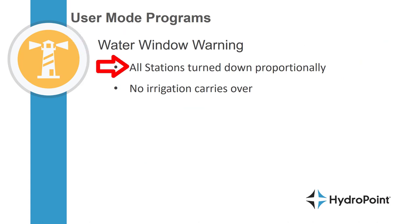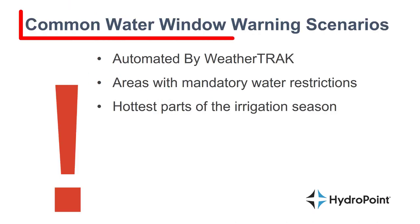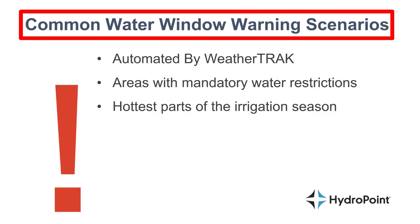However, if you're running your stations in user mode, the water window warning will turn down all stations proportionally to make that irrigation schedule fit inside the water window, but no irrigation carries over.